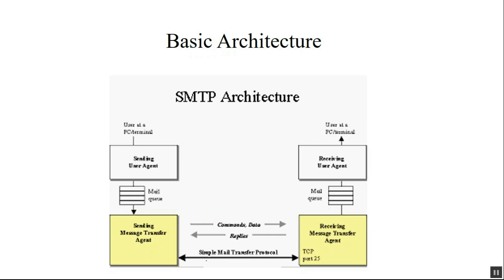Here is the basic architecture diagram. User data from a PC is prepared with both sender and receiver addresses, then the message is sent through SMTP. Multimedia and email messages are queued one by one in a mail queue. The message transfer agent uses SMTP commands and procedures to send messages to the receiver's transfer agent, where they are placed in a mail queue and the receiver agent receives the messages.